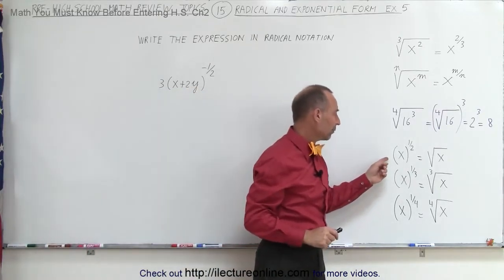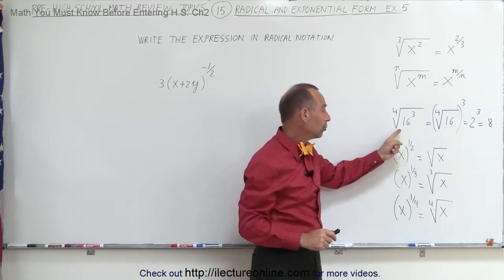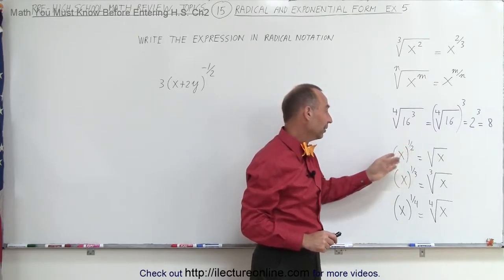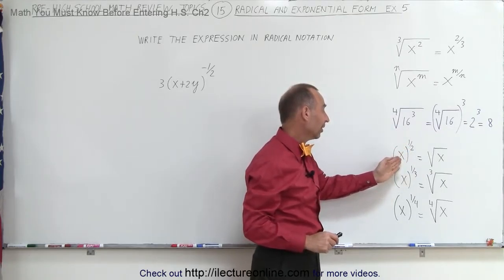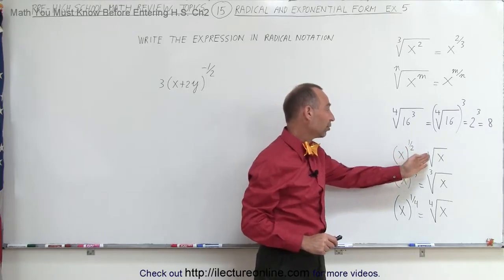Realize that whenever we have an exponent with 1 in the numerator and something else in the denominator, we can simply write it like this: x to the 1/2 power is simply the square root of x.